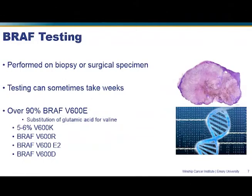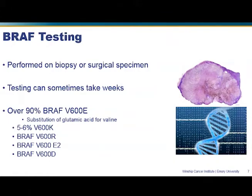Testing for a BRAF mutation is performed on the melanoma itself — usually on the biopsy or surgical specimen. Routinely, if you have lymph nodes involved in the melanoma, after the surgeon removes those lymph nodes, they go to a laboratory where the pathologist will confirm it's melanoma, determine how many lymph nodes are involved, and analyze a piece of the melanoma to find the genetic sequencing and determine if you have the BRAF mutation.